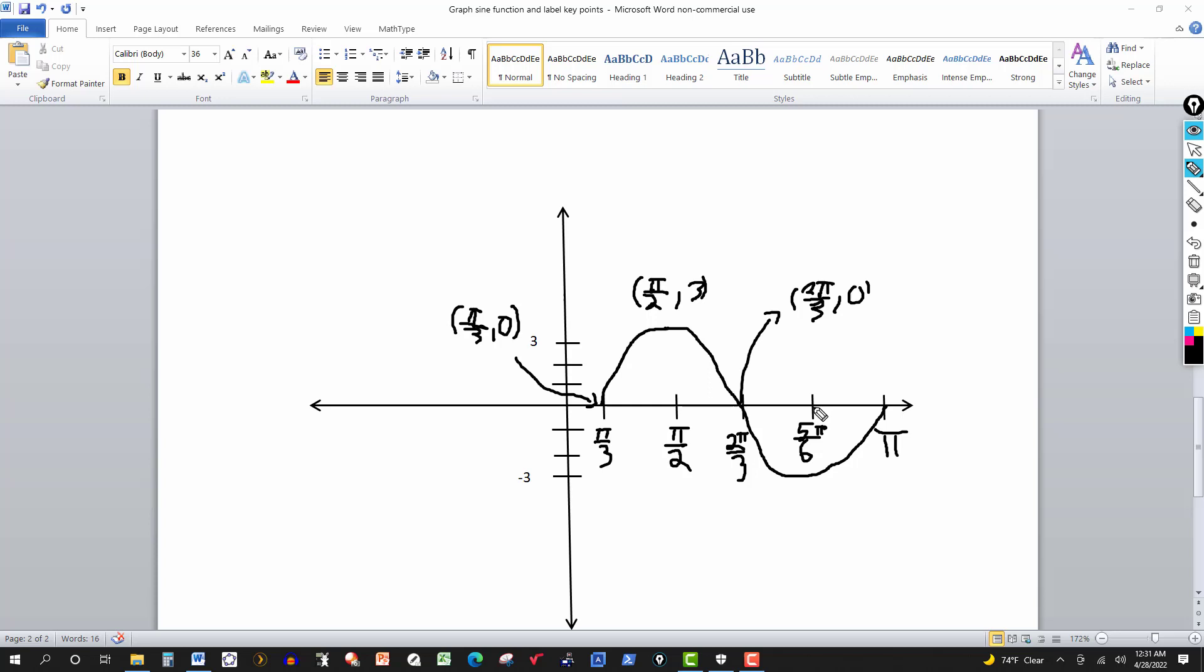And then 5 pi over 6 for this one. And we go down 3 units. So this point down here. Again, the graph is a little bit off, but that's going to be 5 pi over 6. And we go down 3 units in the negative direction. So this would be a negative 3.